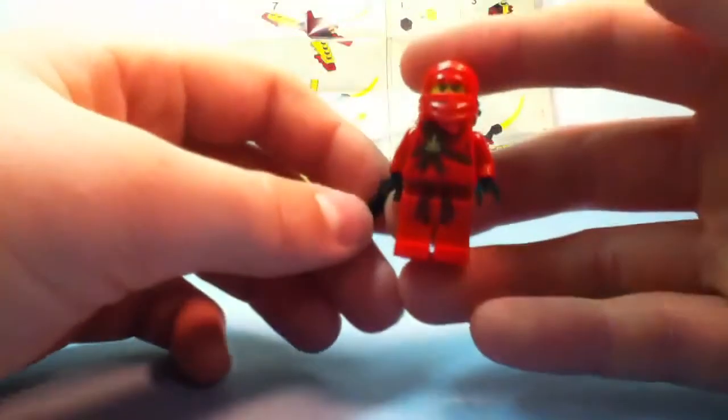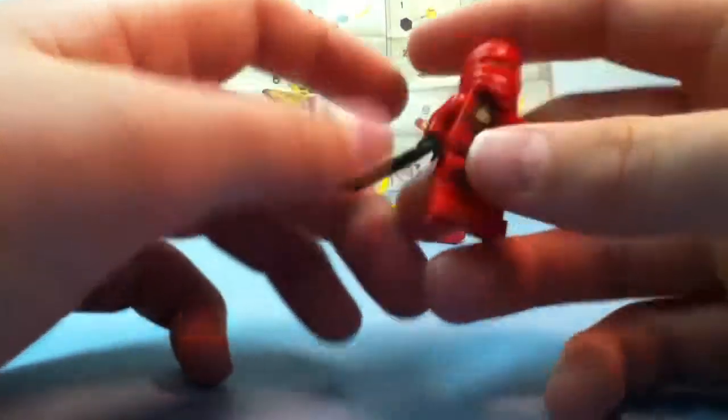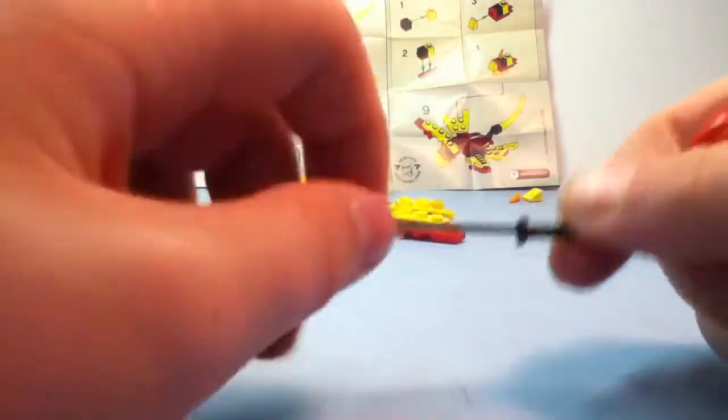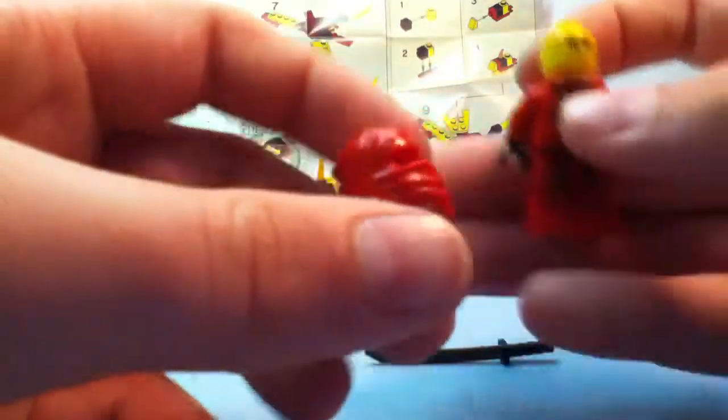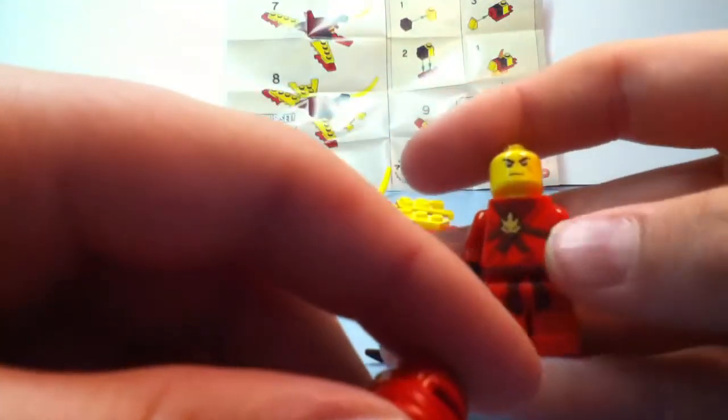But you get Kai, which is awesome. My first Kai minifigure. He gets a black katana, which is a Japanese sword ninja sword, and then a red face mask. His face is very cool, he has some scars.